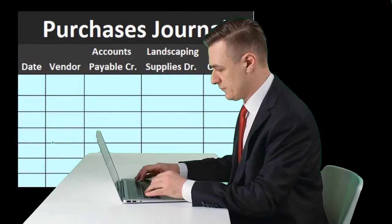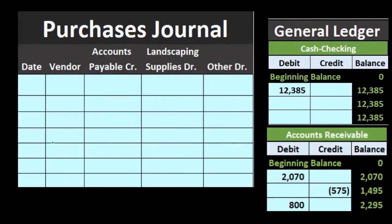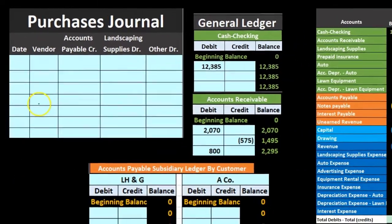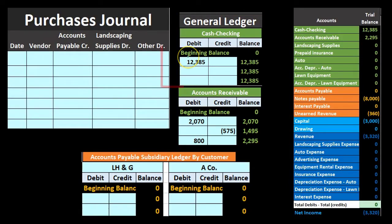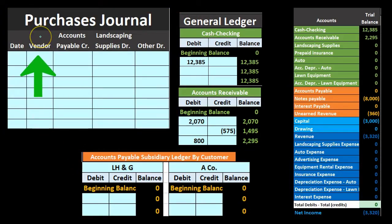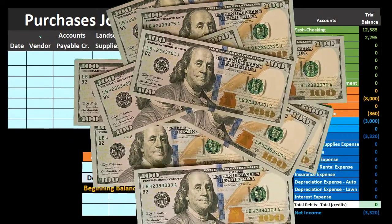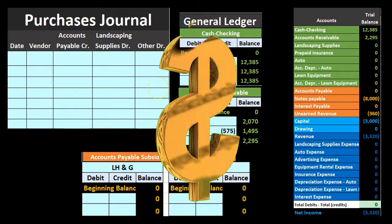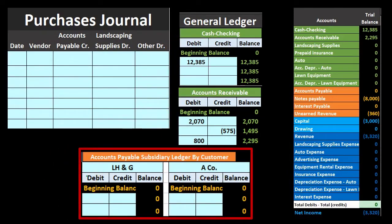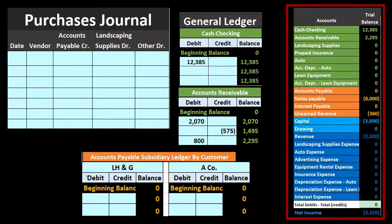We enter data into the purchases journal throughout the month, then at the end of the period create a journal entry to post to the general journal. We also need to create the accounts payable subsidiary ledger as we go, because the purchases journal deals with vendors and accounts payable. We need to track not just dollar amounts but who we owe the money to, which is done through the accounts payable subsidiary ledger.